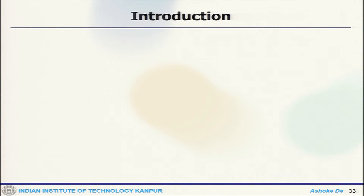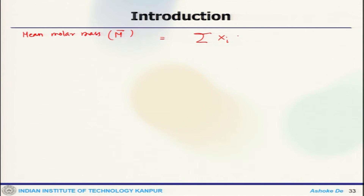One can find out one more thing: the mean molar mass, denoted M-bar. This is for a mixture of species involved in the system. The mean molar mass is the summation of X_i × M_i — that is, each species' mole fraction multiplied by its molar mass — summed over all S species involved in the system.